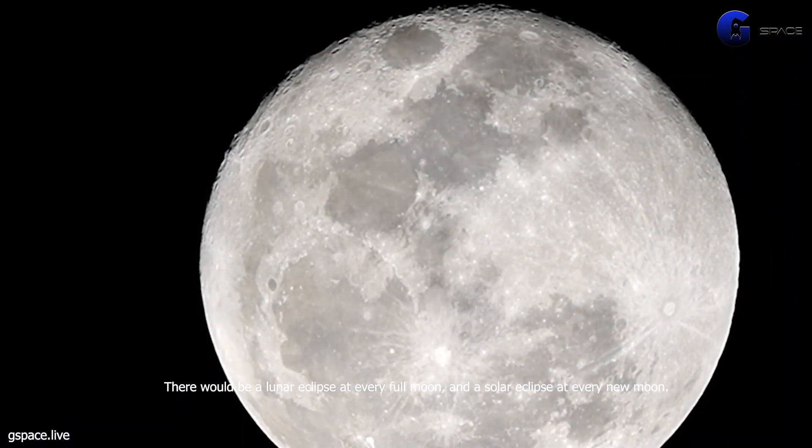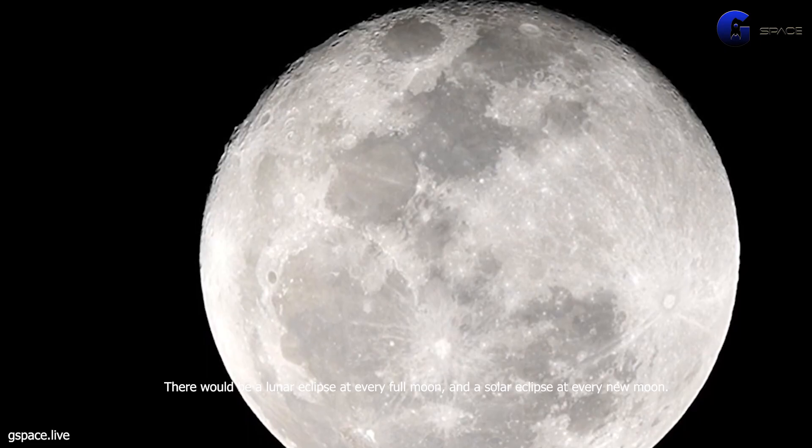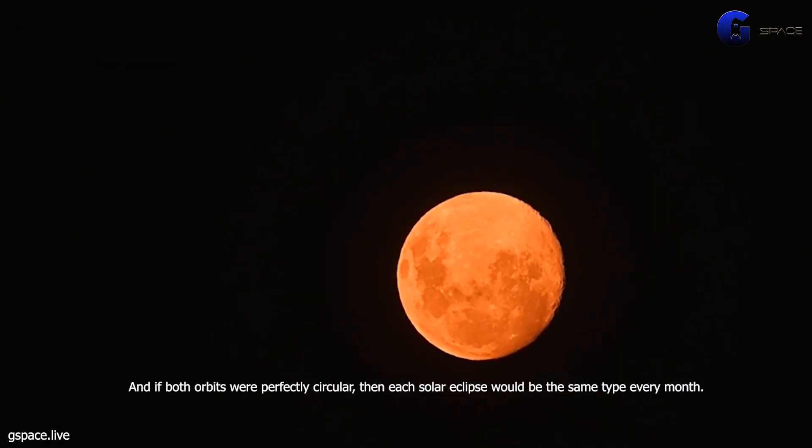There would be a lunar eclipse at every full moon and a solar eclipse at every new moon. And if both orbits were perfectly circular, then each solar eclipse would be the same type every month.